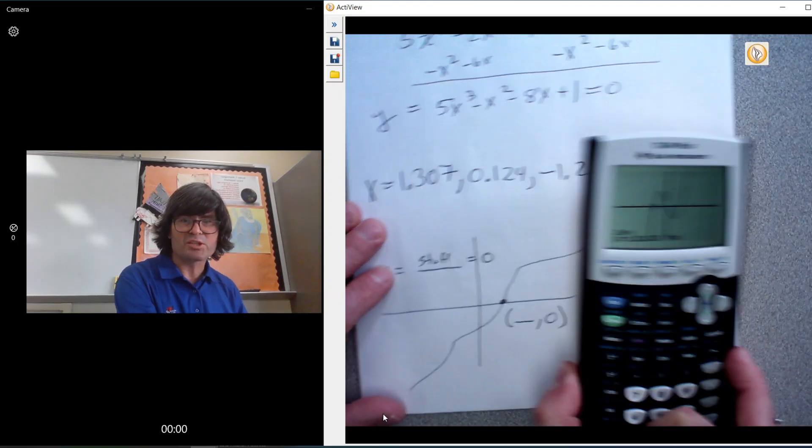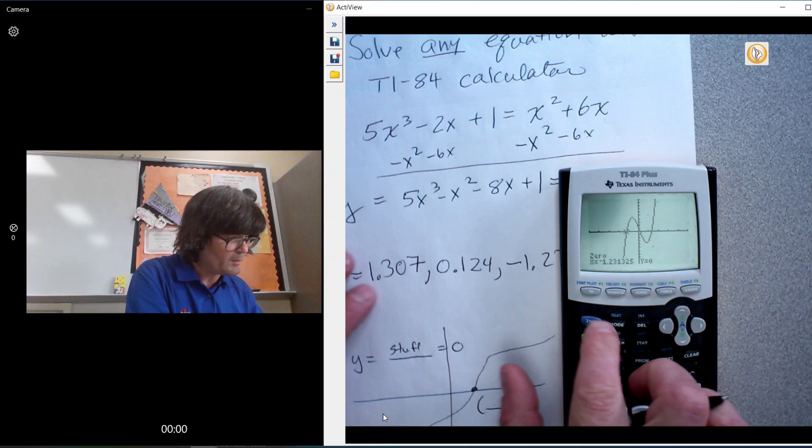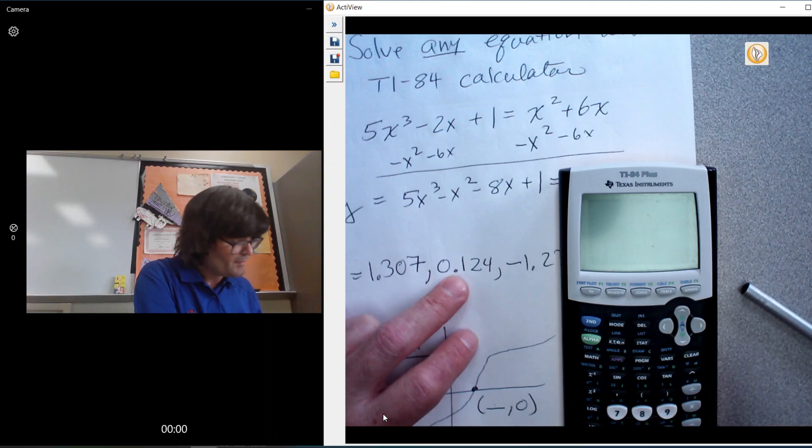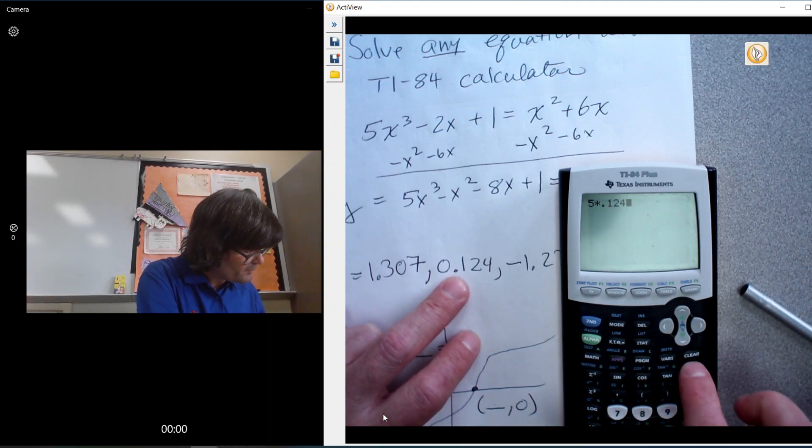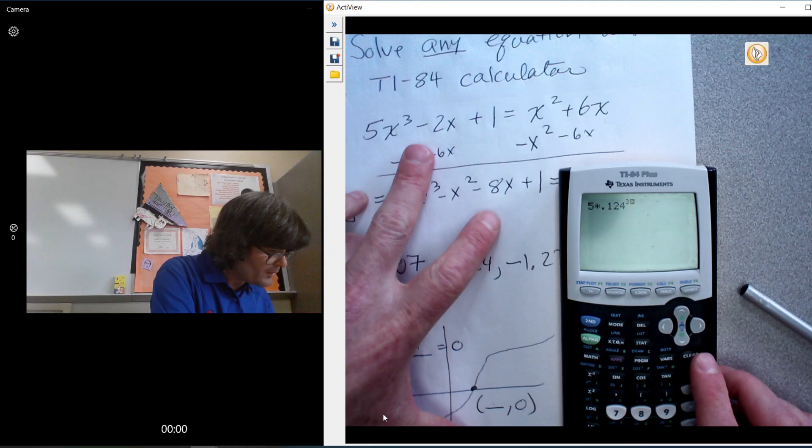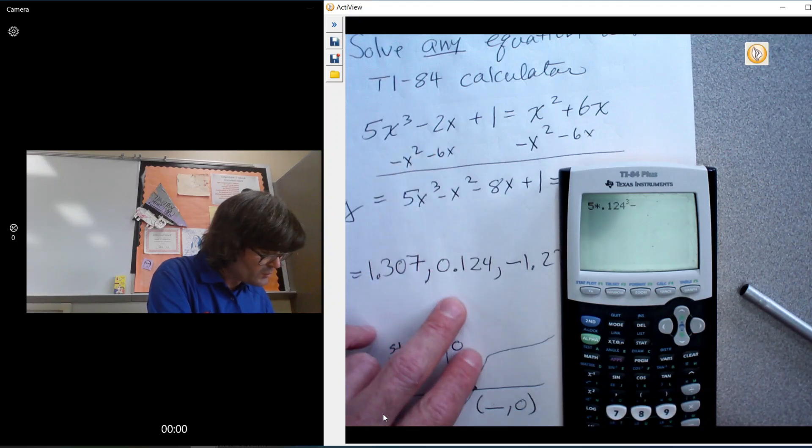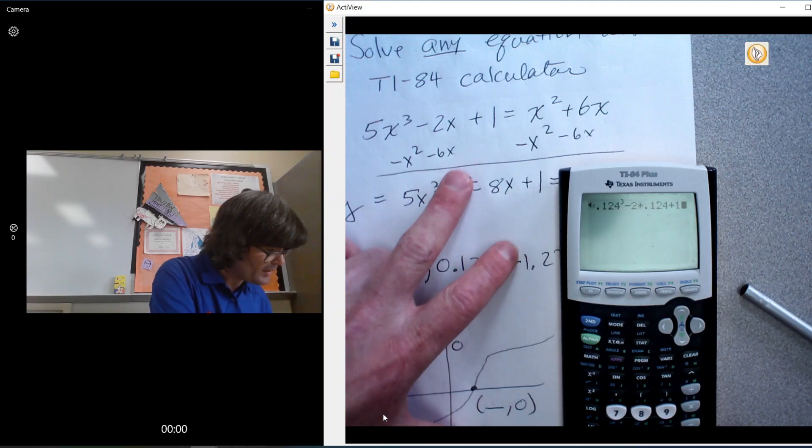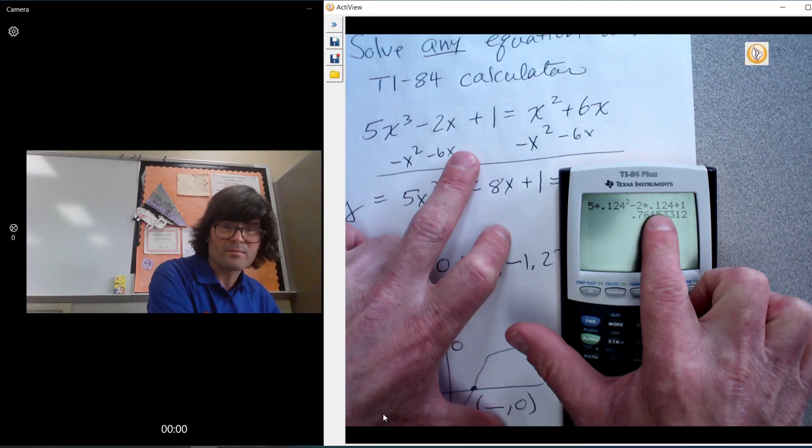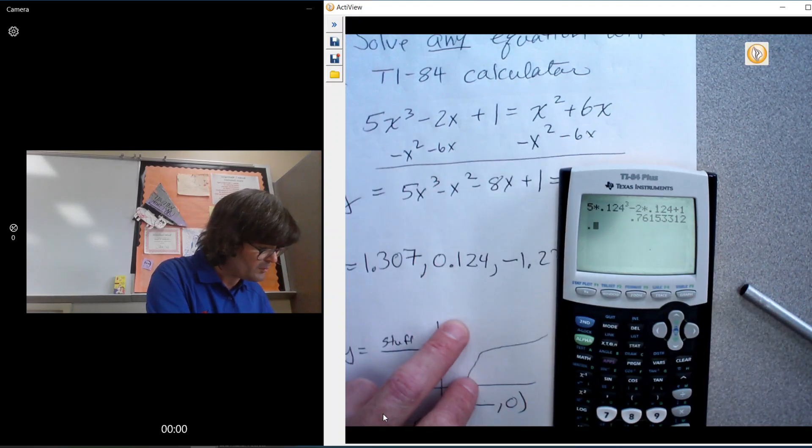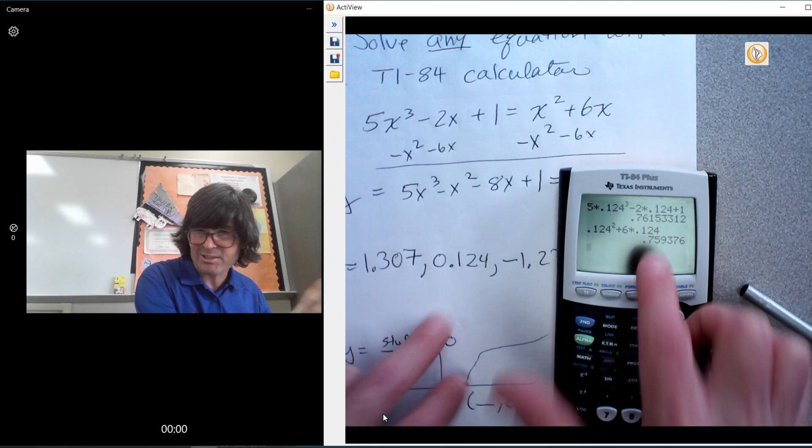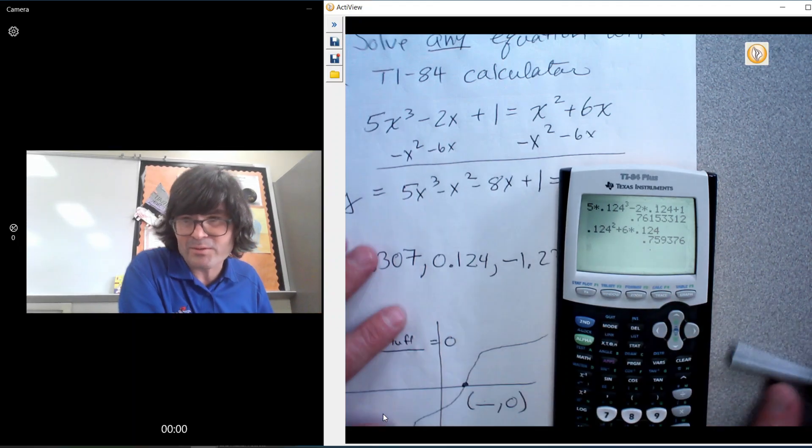And I'm not going to check all these, but we'll just check one of them in my original equation. Make sure the left side equals the right side. I'll quit. How about 0.124? Why not? 5 times 0.124 cubed, right there. And then minus 2 times 0.124. And then plus 1. So that left side should be this number. Then on the right side, x², 0.124², plus 6 times 0.124. And I rounded off, so forgive me, 0.75, 0.76. I'm going to call those the same.